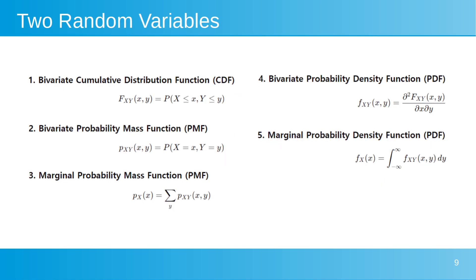In the case of two random variables, the bivariate CDF gives the probability that random variables X and Y will simultaneously be less than or equal to x and y respectively, providing a way to describe their joint distribution. The bivariate PMF represents the probability that discrete random variables X and Y take on specific values x and y. The marginal PMF of X is derived by summing the joint PMF over all possible values of Y, providing the probability distribution of X alone regardless of Y.